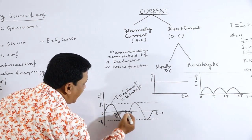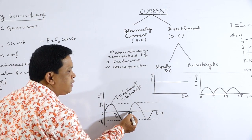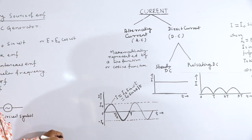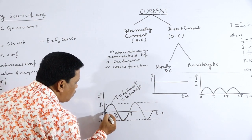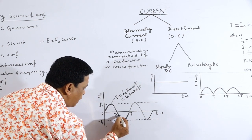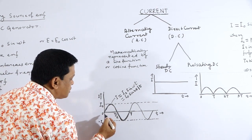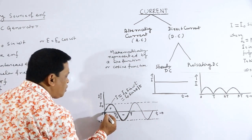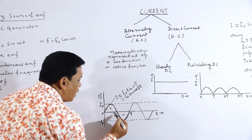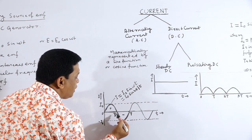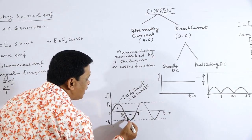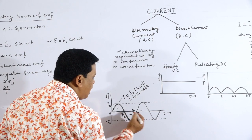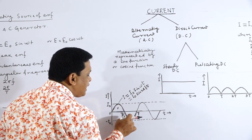The time taken to complete one cycle is known as time period, denoted by capital T. The reciprocal of time period is known as frequency. In one complete cycle of AC, there are two half cycles: a positive half cycle from 0 to T/2, and a negative half cycle from T/2 to T. Two half cycles make one complete cycle.